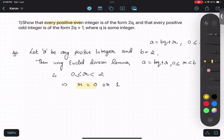Case number 1: if r equals to 0, then the formula will become a equals to 2q plus 0. Therefore, a equals to 2q. Since it is divisible by 2, therefore, it is even.